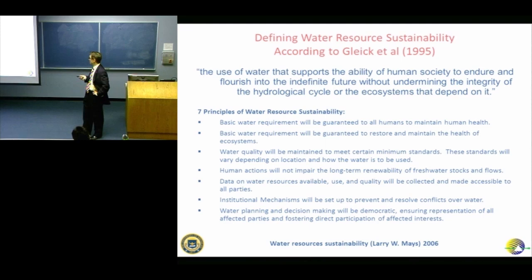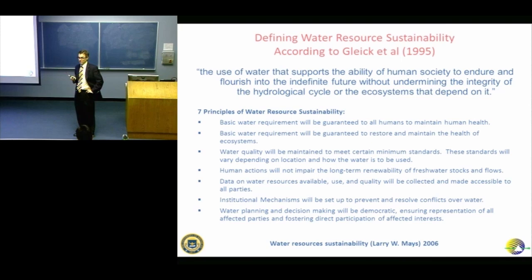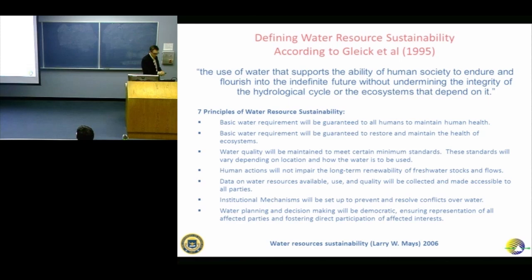What's the hydrological cycle? What's meant by that? Water evaporates, then condenses, and goes around. It ends up in the atmosphere, it comes back. Let's take a look at that.